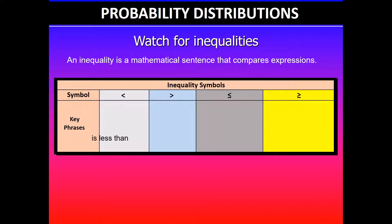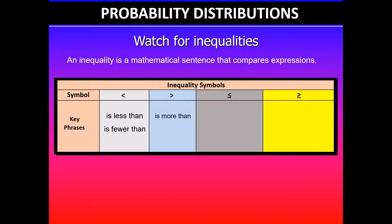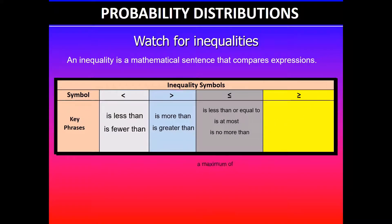The first keyword is 'less than', and the other keyword that goes with less than is 'fewer than'. The second one is 'more than', or 'greater than'. The third one is 'less than or equal to', and the keywords associated with this inequality symbol are 'at most' — at most means less than or equal to — or 'no more than', and 'a maximum of'. So these are the keywords linked to less than or equal to.